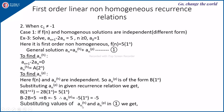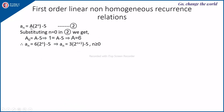Substituting homogeneous and particular solutions into equation 1 gives a(n) = A·2^n - 5. With a(0) = 1, substituting n = 0 gives 1 = A - 5, so A = 6. Therefore a(n) = 6·2^n - 5. Writing 6 = 3·2, this simplifies to a(n) = 3·2^(n+1) - 5, for n ≥ 0.